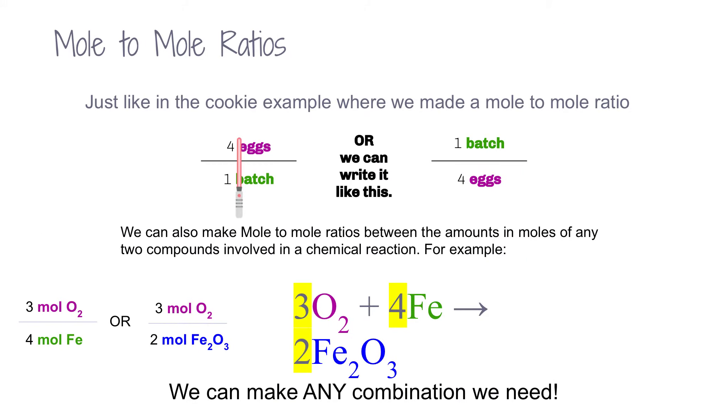So mole-to-mole ratios. Just like the cookie example where we made a mole-to-mole ratio with 4 eggs to 1 batch or 1 batch to 4 eggs, we can make a mole-to-mole ratio using the amounts in moles of any two compounds involved in a chemical reaction. So, for example, in this equation,